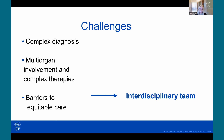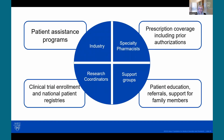Barriers to equitable care are addressed through the interdisciplinary team coming together to create a cohesive plan — not only providing medical therapy, but also addressing financial toxicity, social determinants of health, nutritional status, physical and mental health, and family and genetic counseling. Dr. Nativi and his co-authors identified the key to providing good care within the amyloid center of excellence: working with industry for patient assistance programs, utilizing specialty pharmacists for prescription coverage and prior authorization, support groups, patient education, referral support for family members, and research coordinators for clinical trial enrollment and national patient registries.